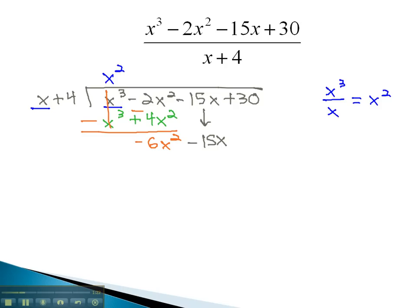We then repeat the division step by dividing the front terms again. This time, negative 6x squared divided by x reduces to negative 6x.